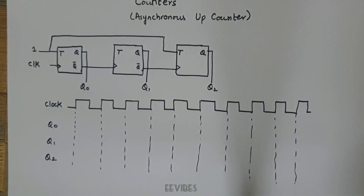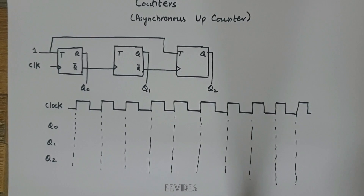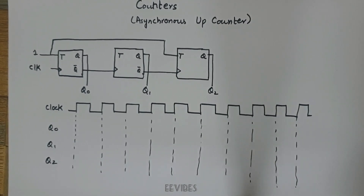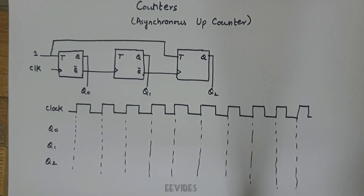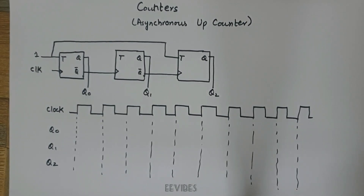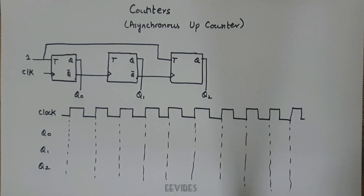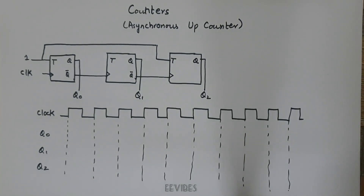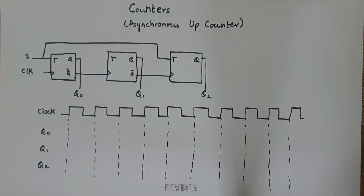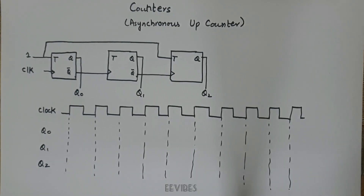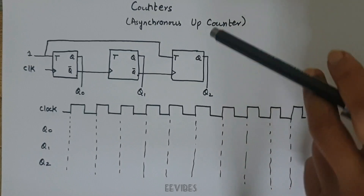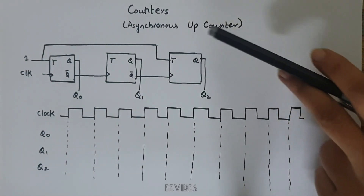Hi students, this is Asma Mishthak and in this lecture I will explain the operations of the counters and how we can design them. In digital circuitry, counters have many applications — they can count the number of people entering or exiting a room, or any number of events happening in the surroundings. There are two types of counters: synchronous and asynchronous counters.